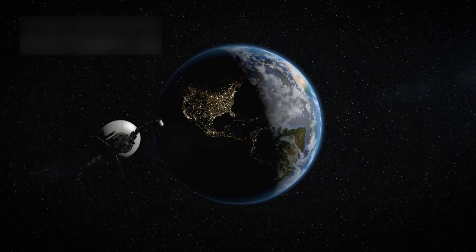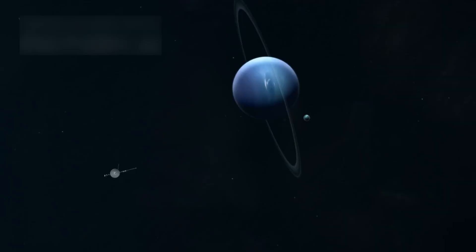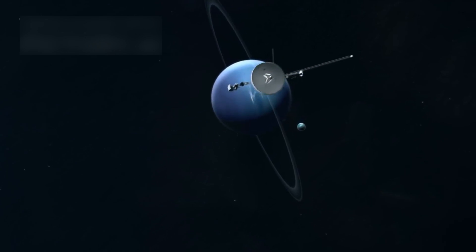Voyager 1, built with 1970s technology, went far beyond its original purpose. It became a pioneer, sending back stunning and detailed data of planets, their rings, and moons.